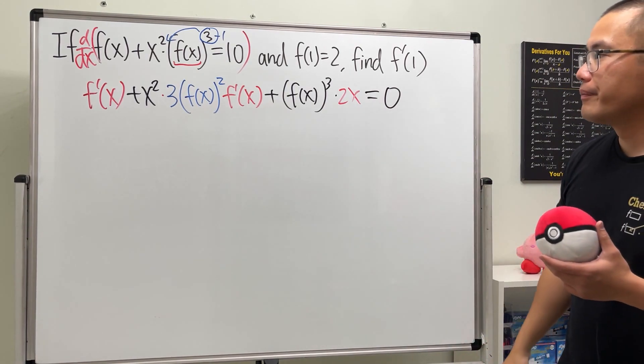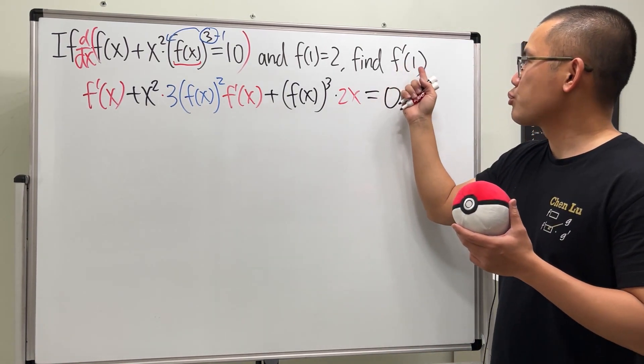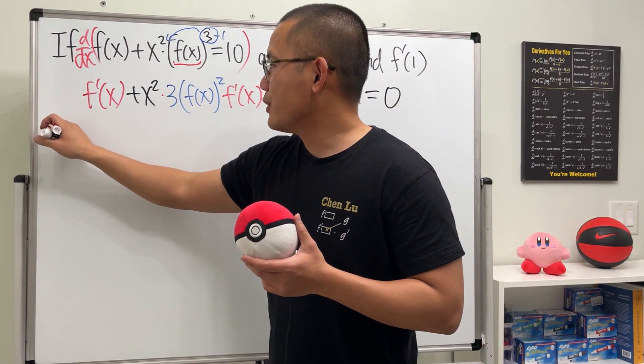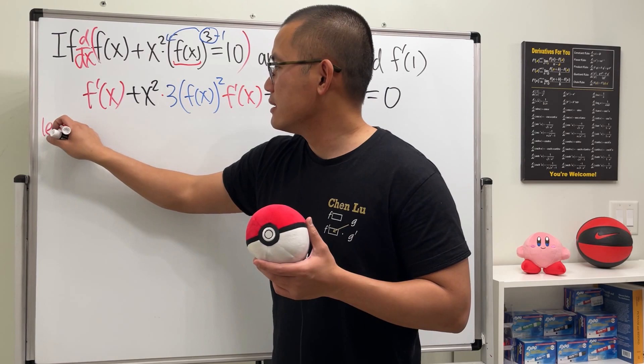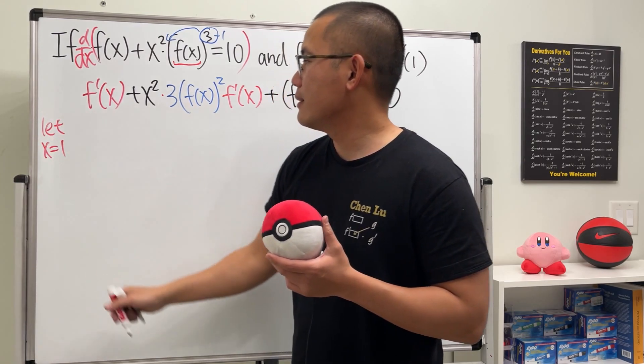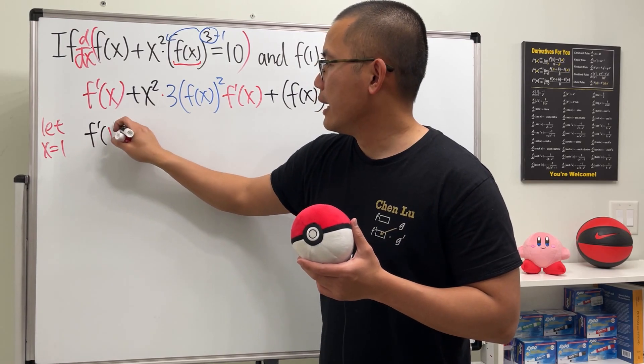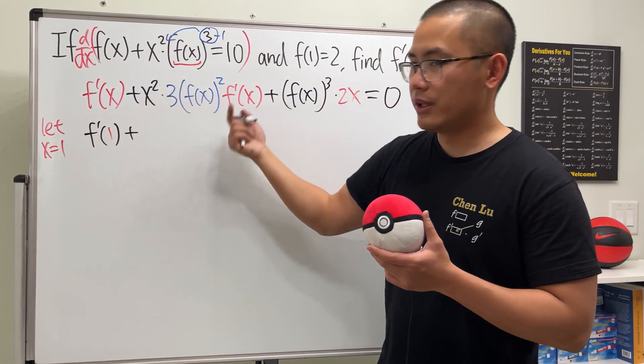So this is what we have. Now we want f prime of 1, meaning that x should be equal to 1. So let's just go ahead and plug in that x equal to 1. So we are going to get f prime of 1, and then that's just going and just plug in 1.